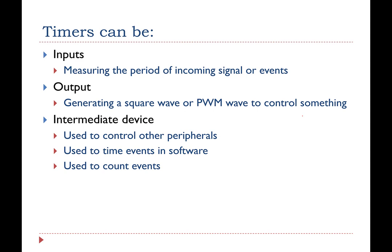When using timers with input signals, we can measure the period or frequency of an incoming signal. When using timers as outputs, we can generate a square wave or pulse width modulated wave. We can also count different events, control other peripherals, or handle events in software that may not actually be external inputs.